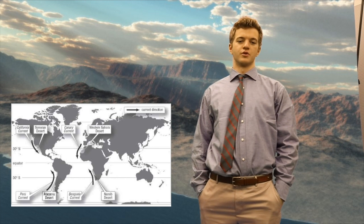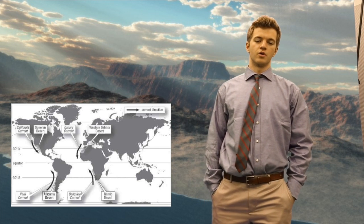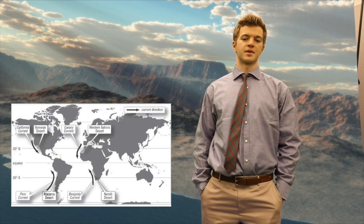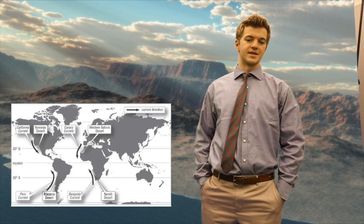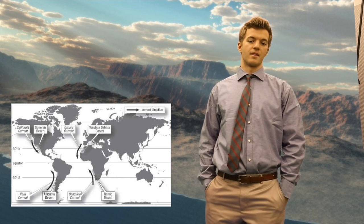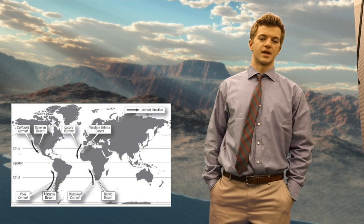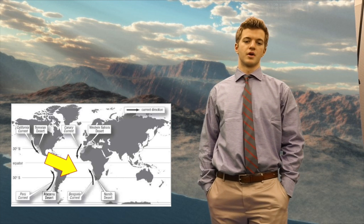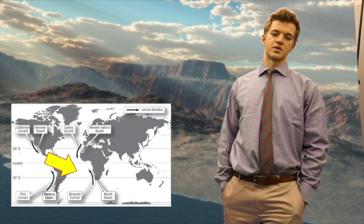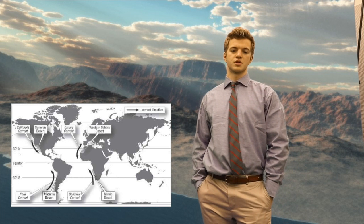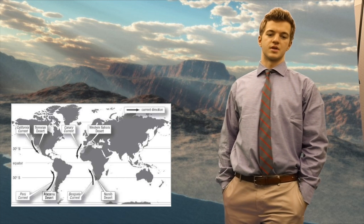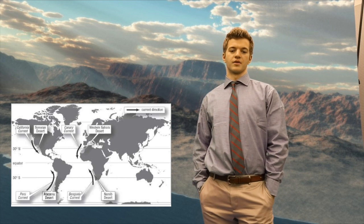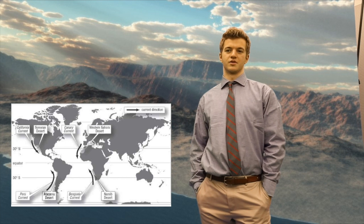Coastal deserts form along cold ocean currents. Cold ocean water cools the overlying air, decreasing the capacity of the air to hold moisture. An example of this is the Humboldt Current, which carries water northward from Antarctica to the western coast of South America. It cools and dries the air that blows east over the coast, making it so that it rarely rains on the coasts of Chile and Peru.